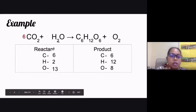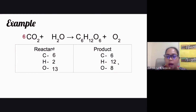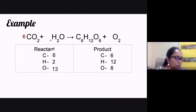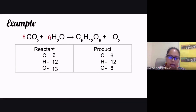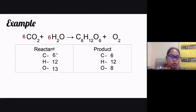Now let's look at hydrogen: the product side has 12 and the reactant side only has two. What coefficient do we need? Six — Daniel says six, and that's correct. Six multiplied by two gives us 12 hydrogen atoms on the reactant side, matching the product side. Hydrogen atoms are now balanced.